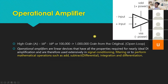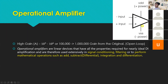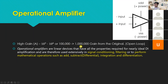Moving to the operational amplifier — it is represented by a triangle lying on its side, like this. It has two inputs, a positive voltage source and a negative voltage source, and then the output. As I mentioned, op-amps have a high gain — it converts the input 100,000 times or 1 million times from the original source.